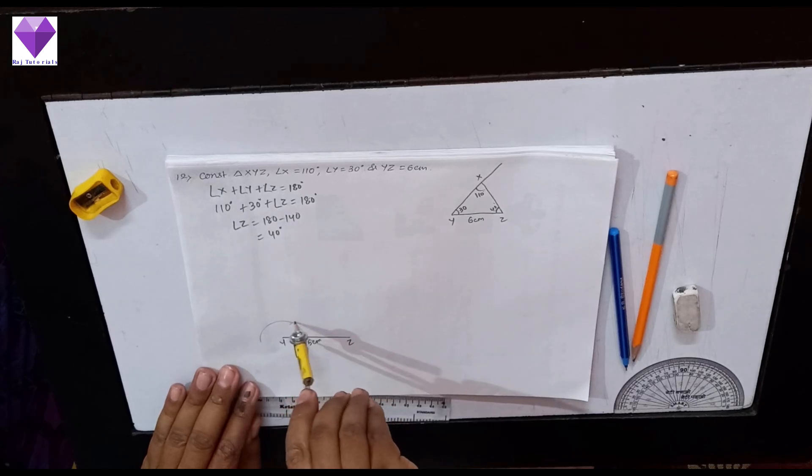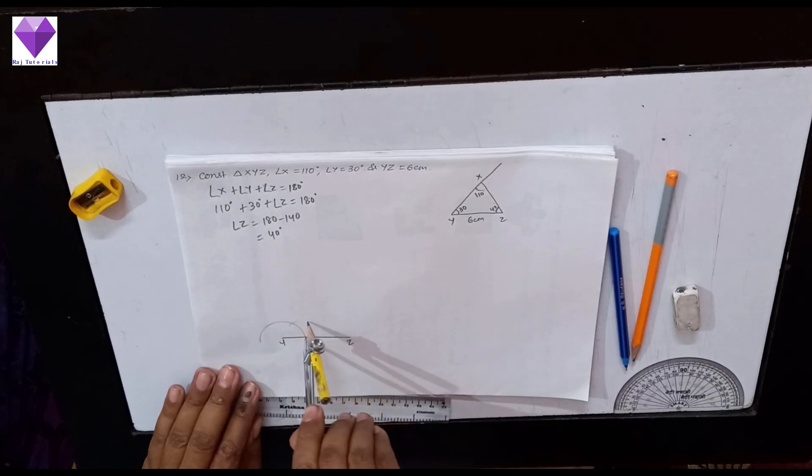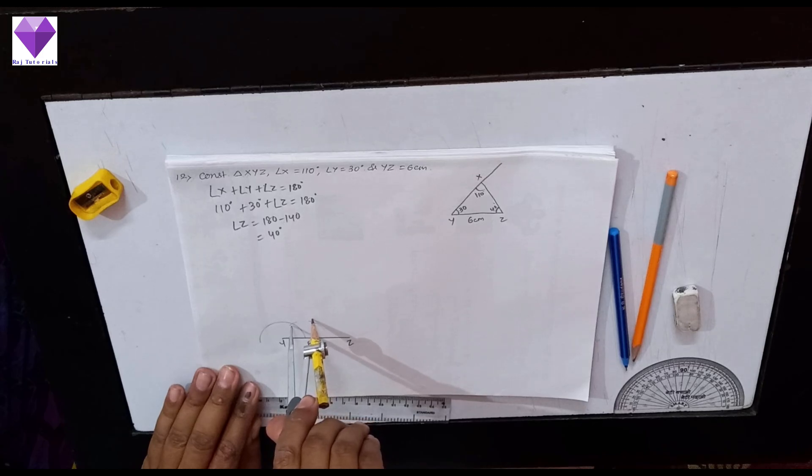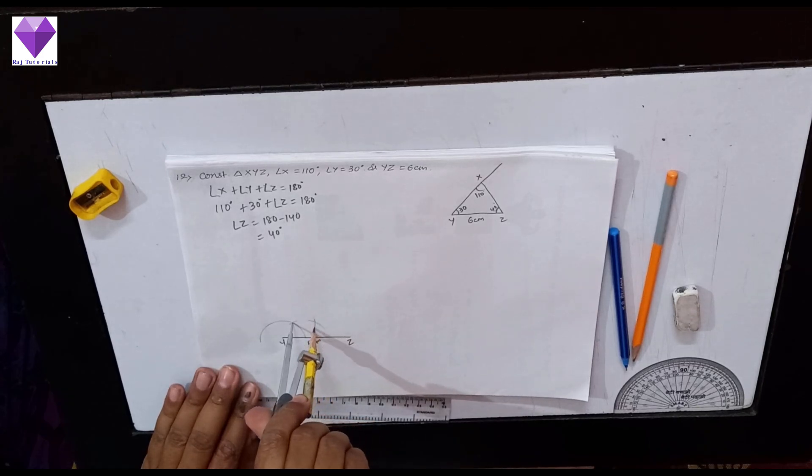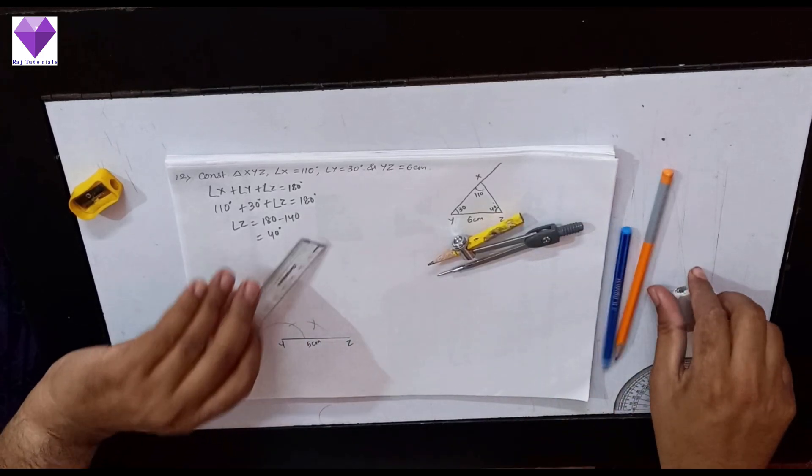Making angle of 60, now with 0 and 60 I am bisecting to get 30 degrees. So I have got a 30 degree angle.